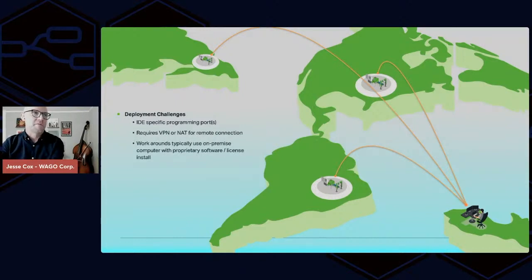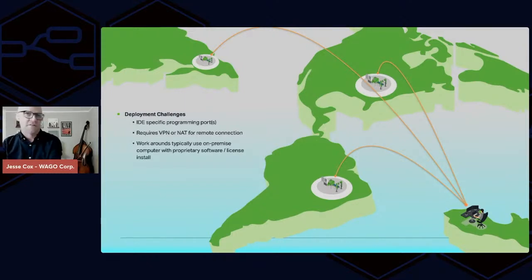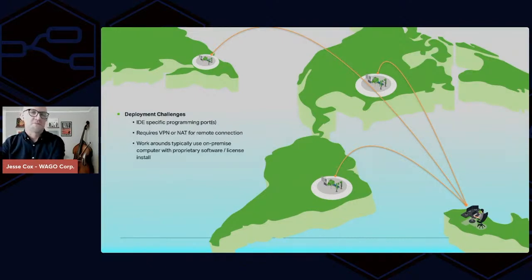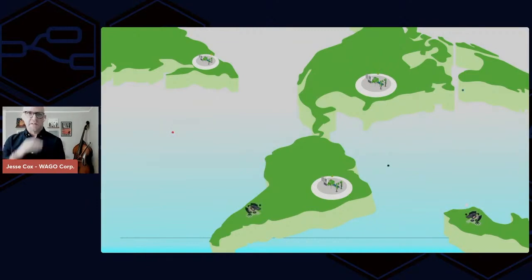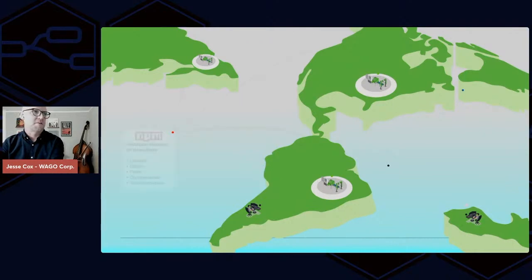The deployment challenge is real — maybe the biggest topic right now — and how we can combat geographic challenges, technology challenges, and security challenges. Even some of the best tools require IDE-specific programming ports to be open on a target, require some sort of VPN or NATting of a network for remote access, and any workarounds typically involve an on-premise computer with proprietary licensed software that has to be managed. This becomes very tricky to manage remotely. The platform-agnostic attribute that Node-RED brings lets us start to shed some of those things.